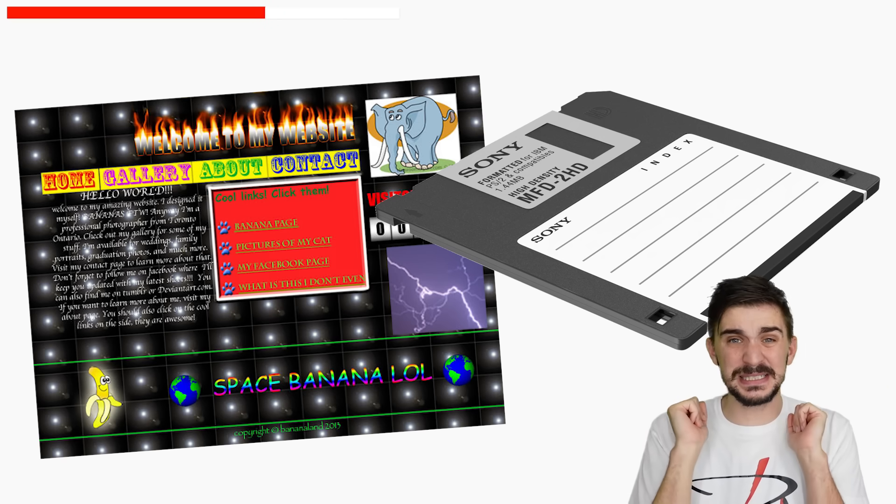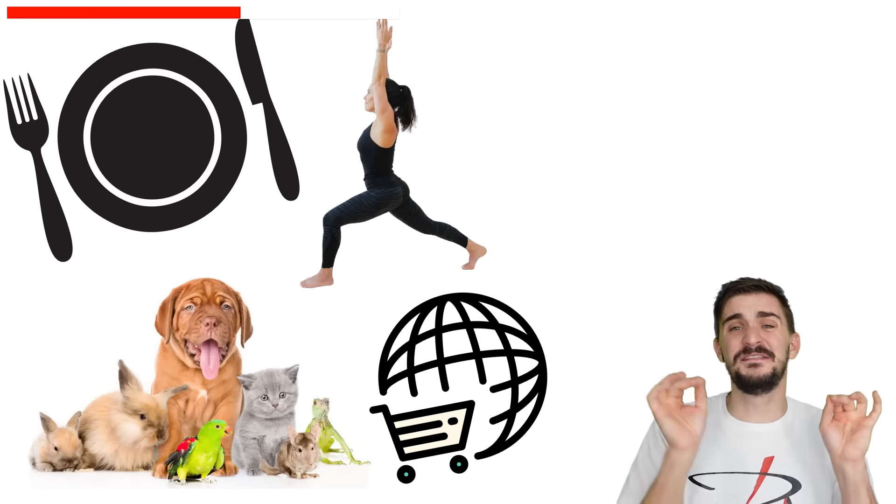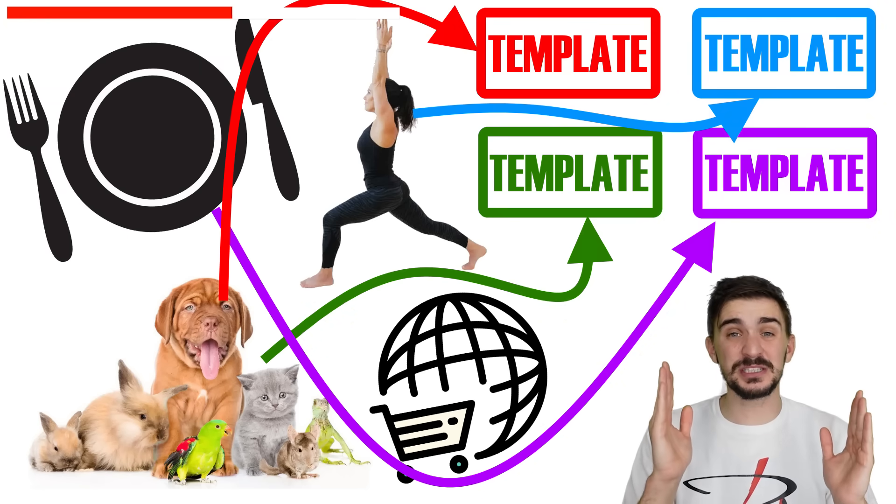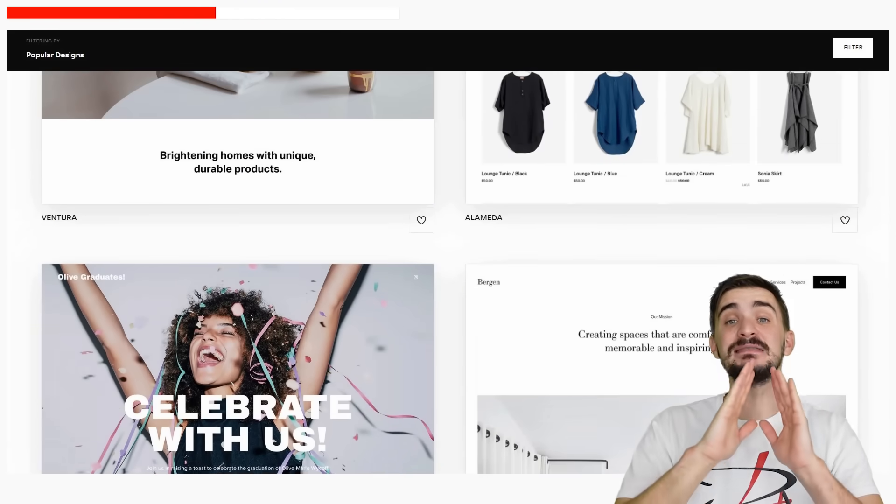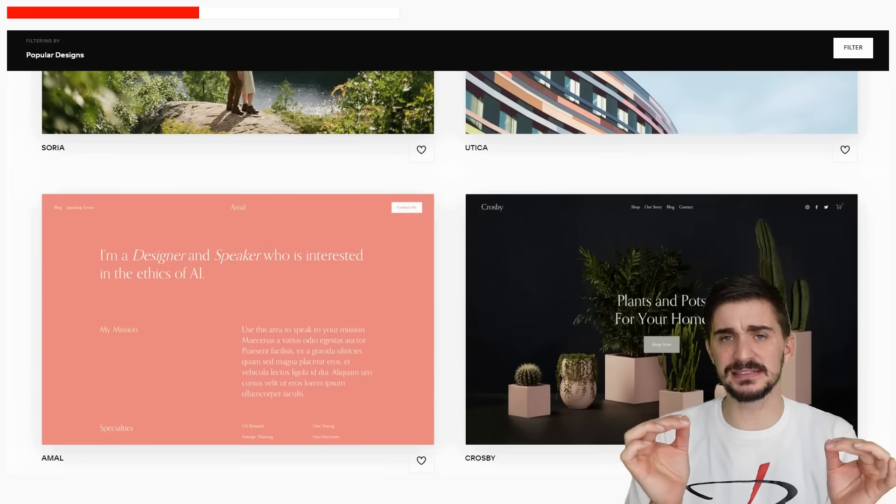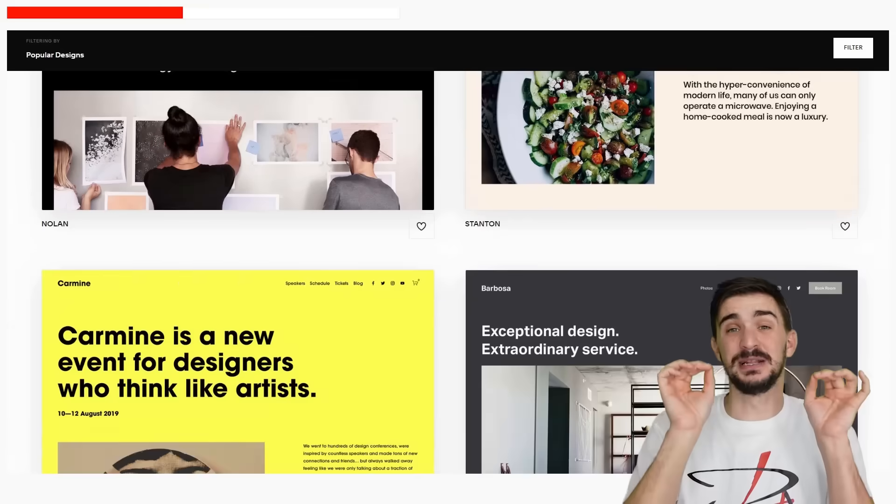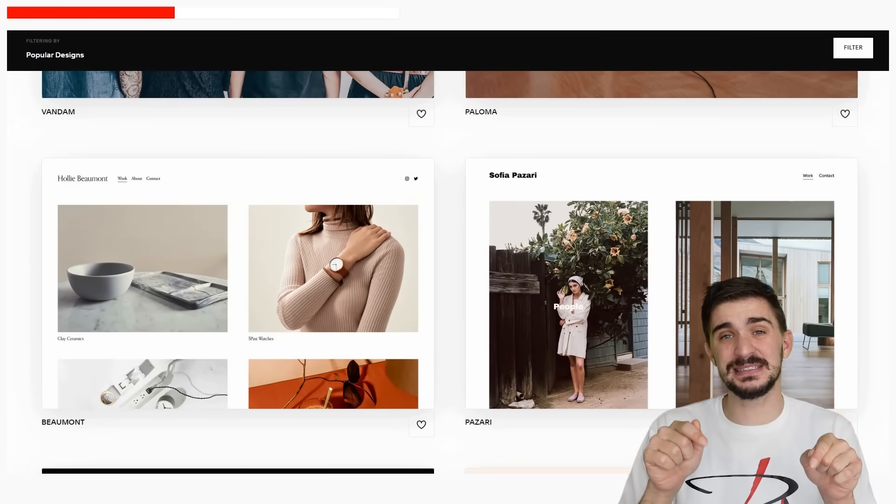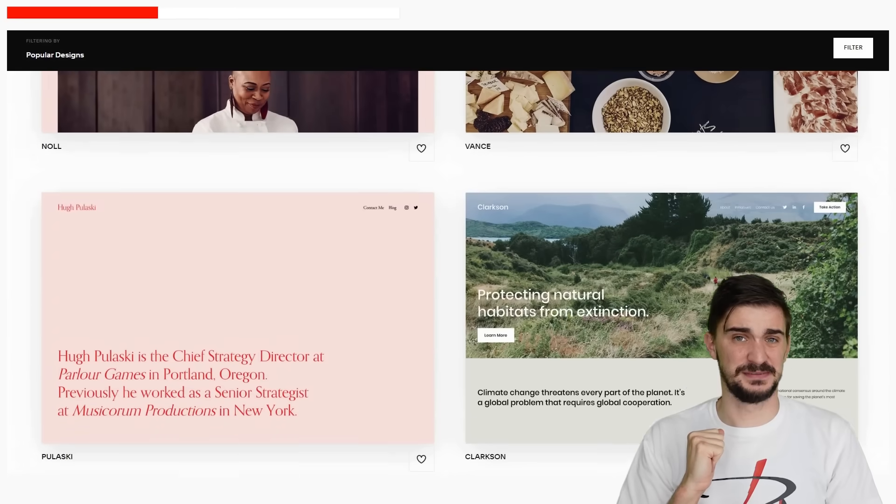But the reality is that most businesses from pet grooming to yoga classes to restaurants to online stores of all kinds fit a certain template. And Squarespace has more templates than you can imagine. They offer endless variety in terms of appealing and professional looking visual styles, but they all have incredibly intuitive use in common. So you can build a website yourself using these templates even if the only thing you know how to use is Microsoft Office.